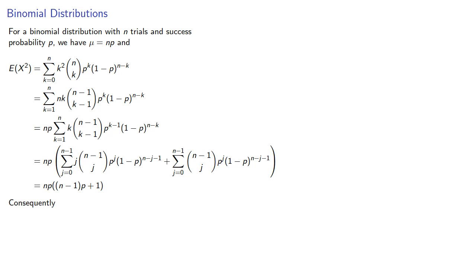But remember the variance is the expected value of X squared minus the square of the expected value of X. And we just computed the expected value of X squared and the expected value of X, again that's np, and so if we simplify we get...